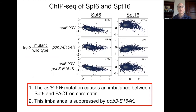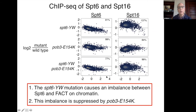In the final data slide I'm showing ChIP-seq experiments looking at the level of association of SPT6 and Spt16 with chromatin in wild type and four mutant strains. Looking at the upper left panel — a scatter plot of SPT6-YW ChIP against wild-type RNA levels — there is a slightly reduced level of SPT6 in this mutant. Surprisingly, when we looked at Spt16 ChIP, the level is actually greatly elevated compared to wild type. So in SPT6-YW there is an altered balance of SPT6 and FACT on chromatin.